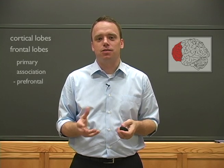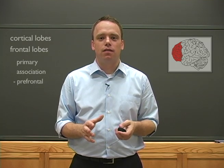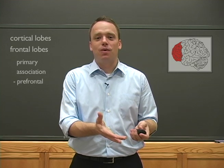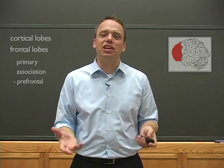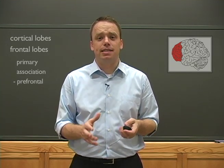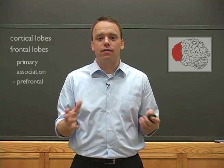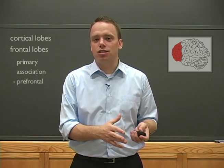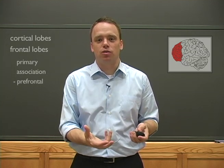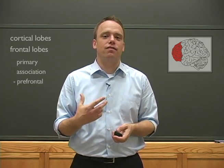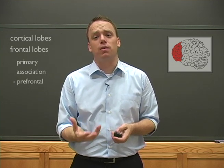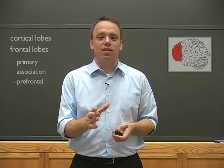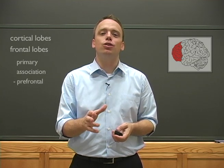The story of Phineas Gage is important for two reasons. First, and most obvious, is that judging by what happened to him, it seems pretty clear that the prefrontal cortex is important for several executive functions — clearly Phineas wasn't as responsible, didn't have as much emotional regulation, and didn't have the kind of goal-directed behavior he once had. But just as important is what Phineas still could do.